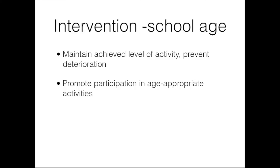Therapy at school age may focus on prevention of secondary impairments, problem-solving to overcome environmental and societal barriers, and self-management — it's really important that children are learning to manage their own condition and their own life. We also want to continue to focus on mobility, but as children age they may require different devices, either improving to a less restrictive device or needing to address community mobility over longer distances. School and community participation and recreation are key.